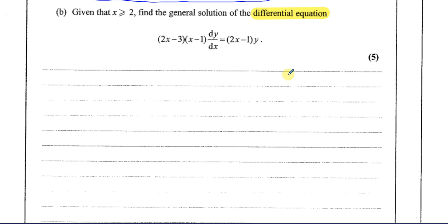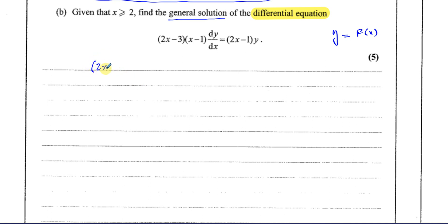We want to solve (2x minus 3)(x minus 1) dy/dx equals (2x minus 1)y. To do that, I integrate both sides with respect to x. When I integrate, the dx cancels, leaving dy on one side. This is called separating the variables — all y terms go on the dy side and all x terms go on the dx side. Dividing both sides by y and by (2x minus 3)(x minus 1), we get 1/y dy equals (2x minus 1)/[(x minus 1)(2x minus 3)] dx.